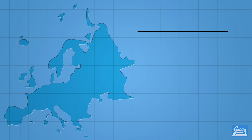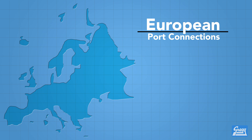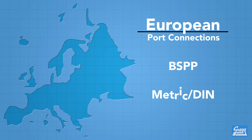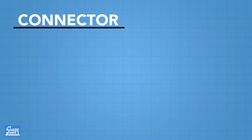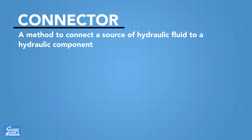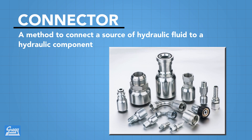Some common European ports are going to be BSPP, metric, or DIP. Another thing to consider is what is a connector? This is a method to connect a source of hydraulic fluid to a hydraulic component. This can be tube or hose end connections.